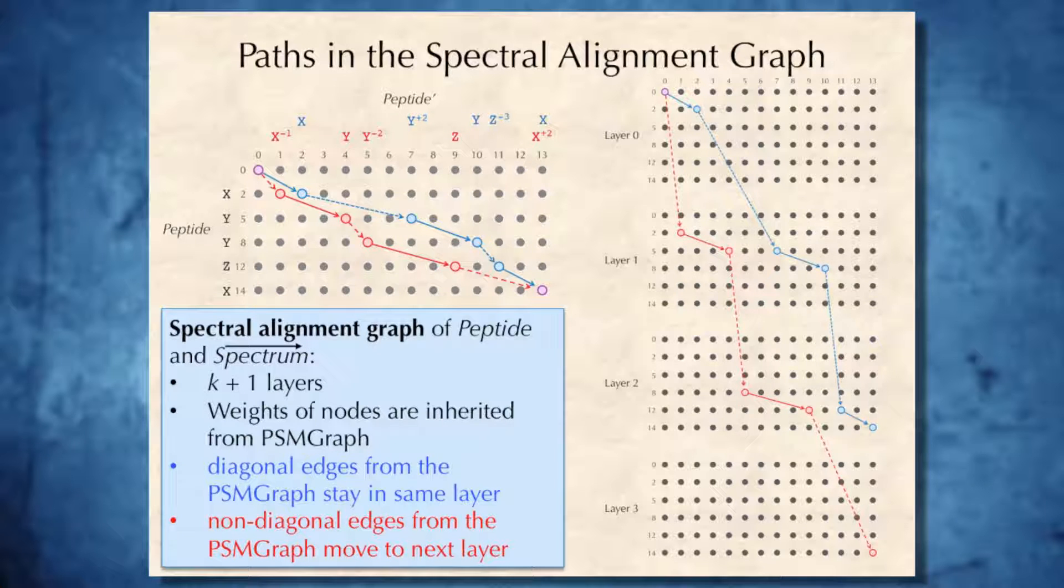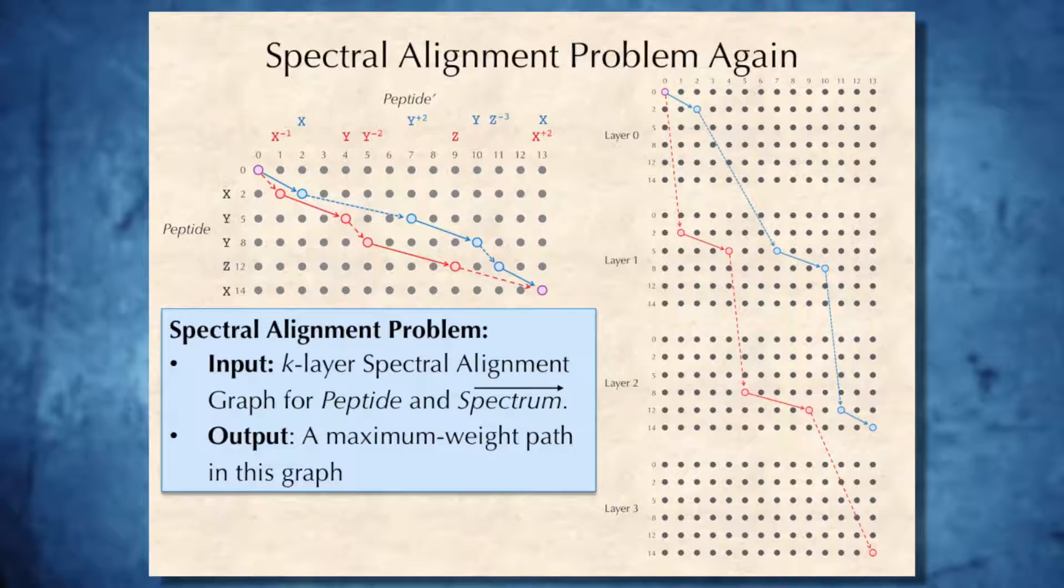And finally, for every path in the original PSM graph, we will have a path in the spectral alignment graph going through multiple layers. And the spectral alignment problem is now reformulated as finding paths in the k-layer spectral alignment graph. And our goal is to find a maximum weight path in this graph.